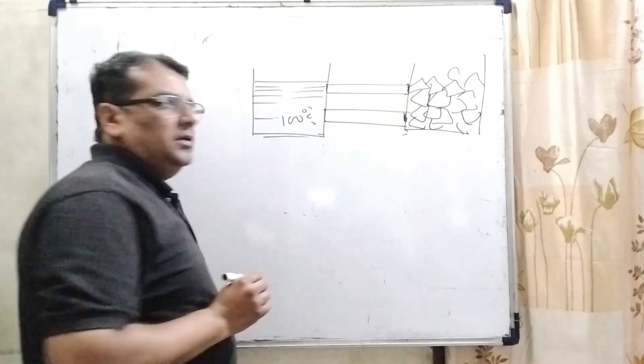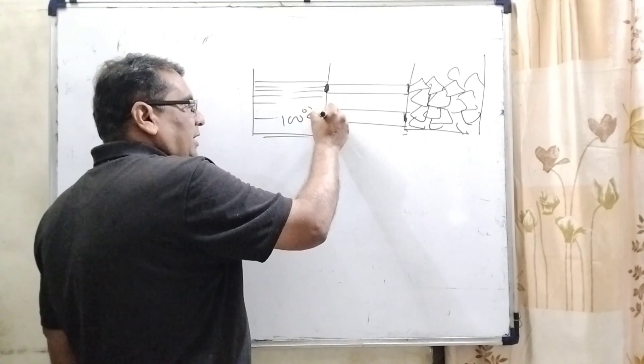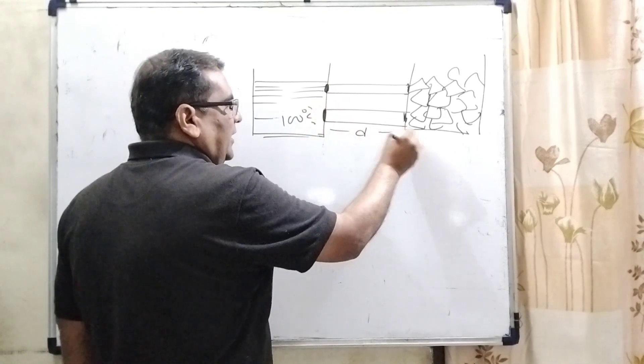When the connecting rods are connected in parallel, then we can see that here, the contact area becomes double and length is same.